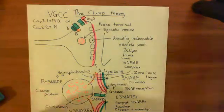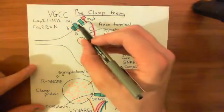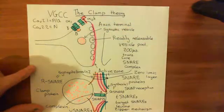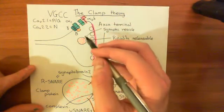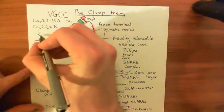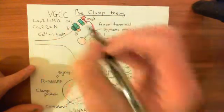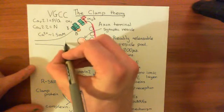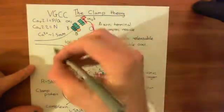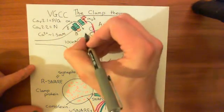When the membrane depolarizes, it's going to activate these voltage-gated calcium channels of the N or PQ type. When they open, calcium is going to move in, because there is a massive calcium gradient across the cell membrane. Calcium concentration in the extracellular fluid is approximately 1.5 millimolar, whereas calcium concentration inside the cell is approximately 100 nanomolar. This big concentration gradient favours the movement of calcium into the cell, so when the channel opens, calcium moves in.